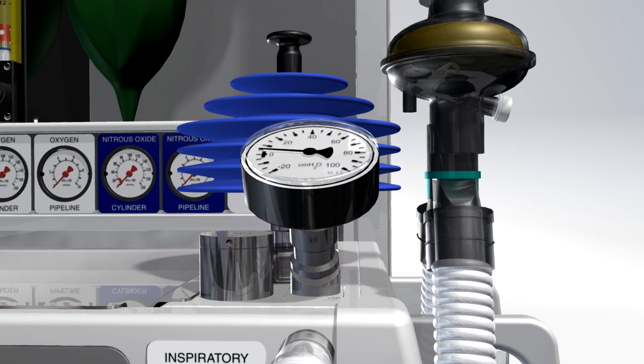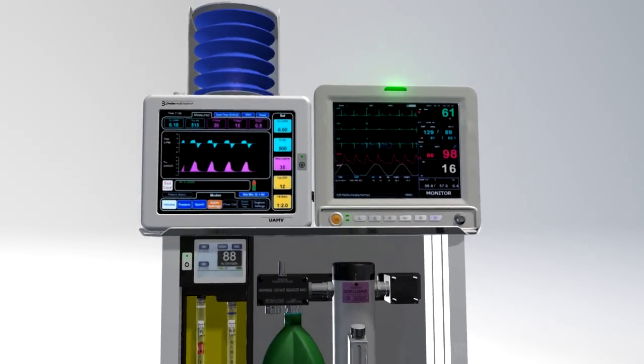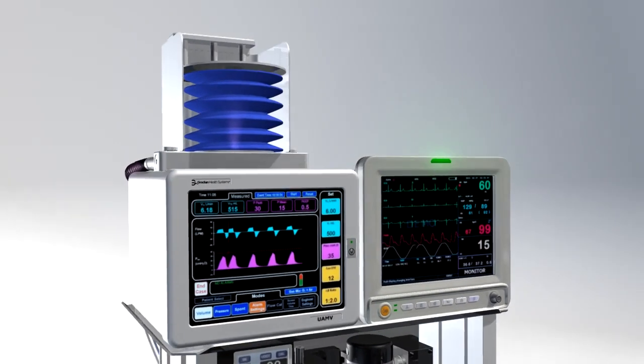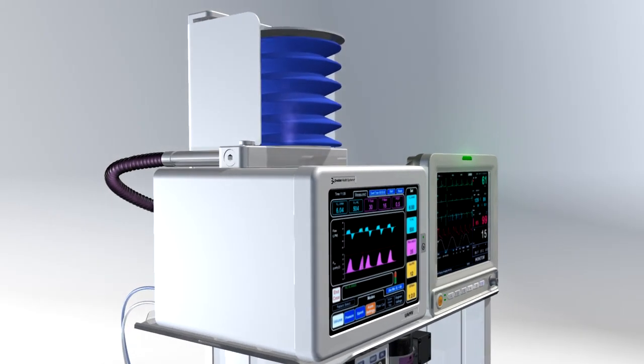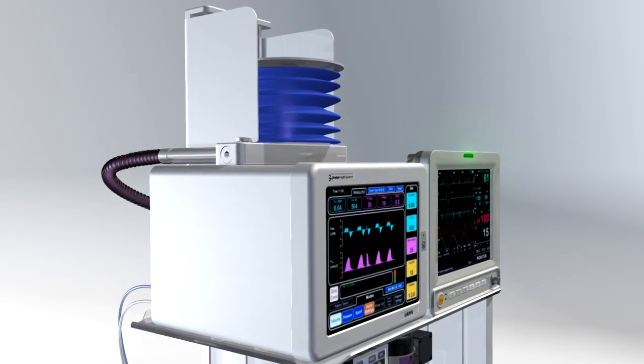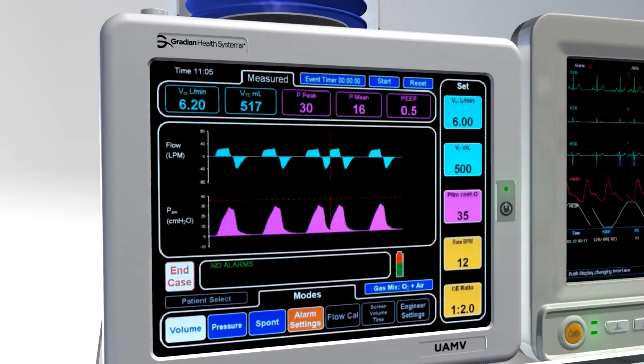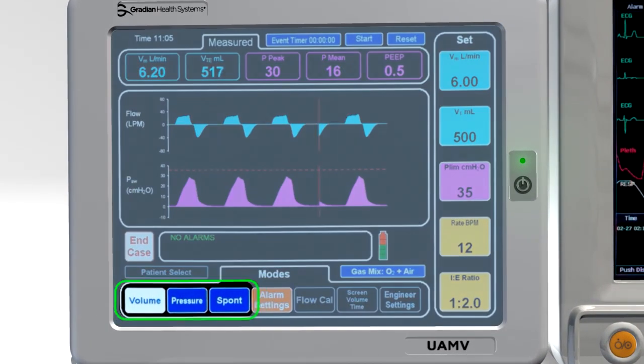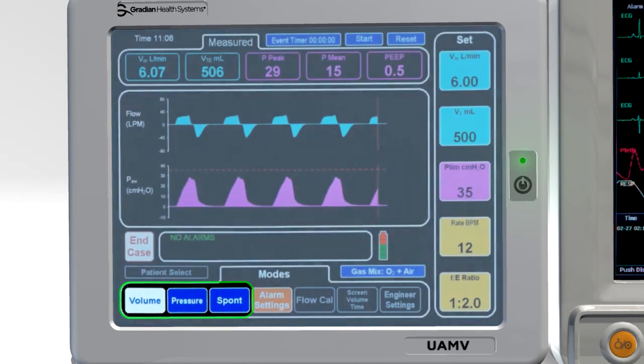The optional ventilator provides automatic IPPV. It is electrically driven and does not require compressed gas. Internal batteries provide up to six hours of backup operation. The UAM ventilator operates in volume control and pressure control modes. During spontaneous breathing and manual IPPV, it will display pressure and flow readings.